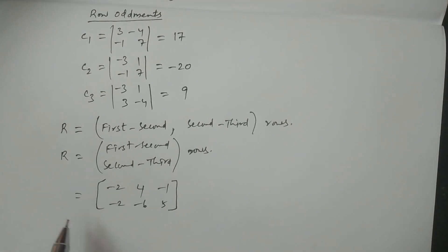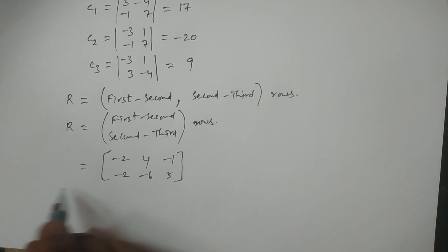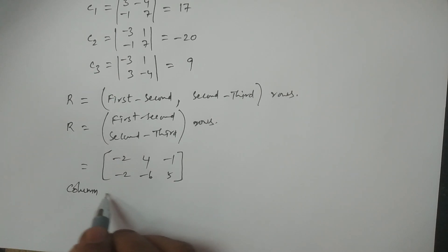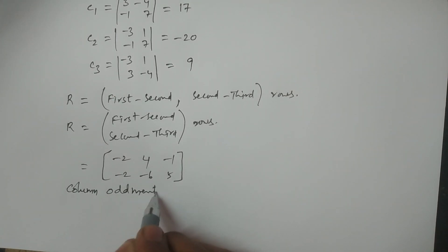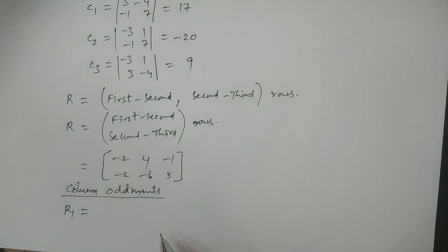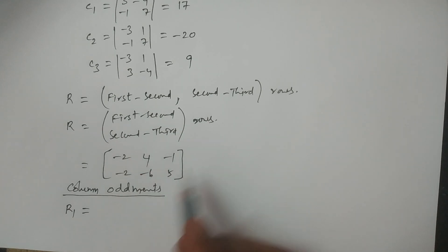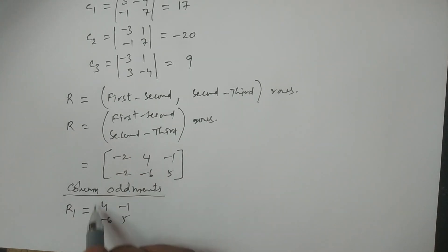This is the new row matrix R which has three columns. Therefore we get the column oddments. The column oddments are obtained by calculating determinants r1, r2, r3. For r1, delete the first column — remaining values are minus two, minus two, four, minus one, minus six, five — calculate determinant to get 14.